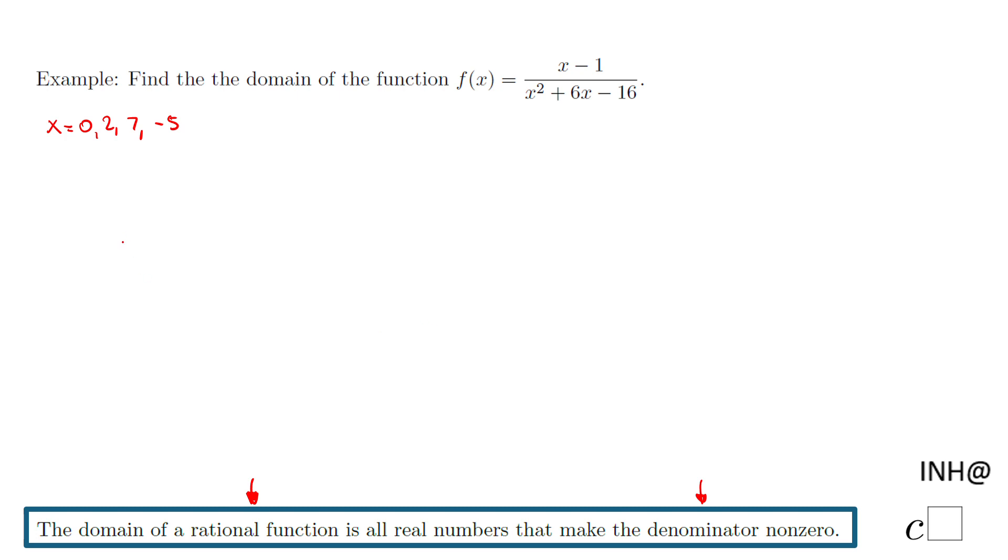Instead, what you want to do is take this denominator and set it equal to zero. We'll spend less time by finding when this denominator equals zero. So we have this quadratic equation, and one way to solve it, if possible, is by factoring.